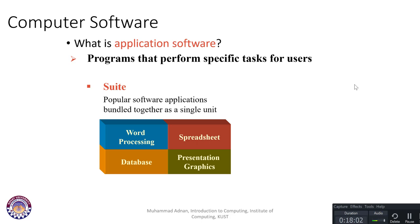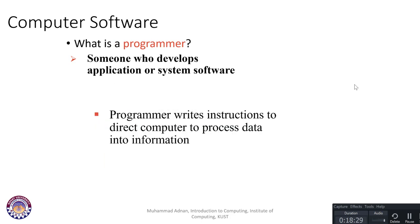Application software is installed on top of the operating system and performs specific tasks for users — like Microsoft Office, which includes word processing, spreadsheets like Excel, databases like Access, and presentations like PowerPoint. A programmer is someone who develops application or system software, writes instructions, and directs the computer to process data into information. Programmers are very skillful and talented people.